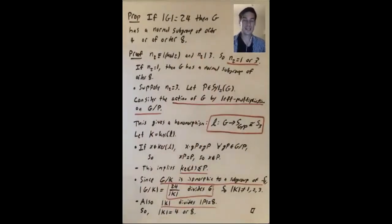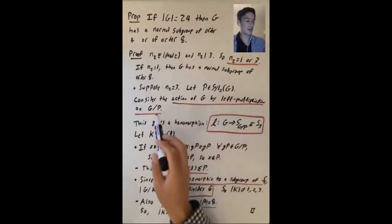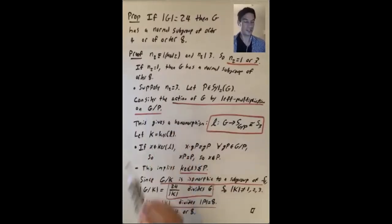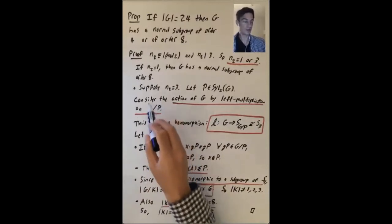And our normal subgroup is going to come from the kernel. So this idea seems kind of tricky at first, but this is a pretty common way to use the Sylow theorems to prove these kinds of statements about the existence of normal subgroups. So where does our group action come from?